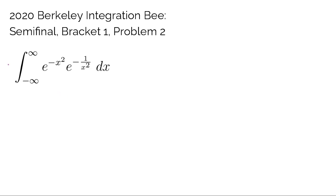Here we have a pretty picturesque looking problem from 2020 Berkeley Integration B. The participants of this competition had 4 minutes to complete this problem correctly. If you want to try it out on your own, do pause the video, maybe time yourself, and see if you can get the answer in 4 minutes.